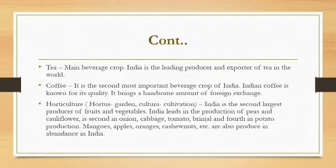Tea is a main beverage crop — India is the leading producer and exporter of tea in the world. Coffee is the second most important beverage crop of India; Indian coffee is known for its quality worldwide and brings a large amount of foreign exchange. Horticulture — 'hortus' means garden and 'kultura' means cultivation, literally meaning garden cultivation. India is the second largest producer of fruits and vegetables, leading in the production of peas and cauliflower, and also produces mangoes, apples, oranges, and cashew nuts in abundance.